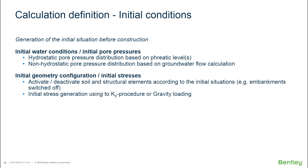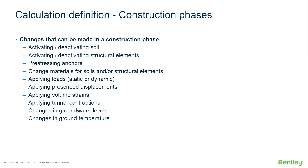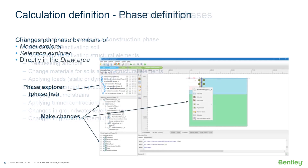In construction phases, we can activate or deactivate soil, activate or deactivate structural elements and pre-stressed anchors, change materials for soil — for example, if you want to do soil improvement you may replace the soil material with improved properties. We can also apply loads, change load values, prescribe displacements, apply volume constraints to model soil expansion or grout insertion, apply tunnel contraction, change groundwater levels, and change ground temperature. All of these can be changed for every subsequent phase.